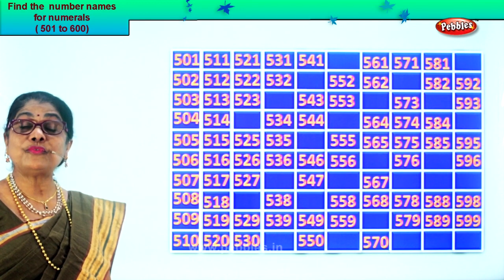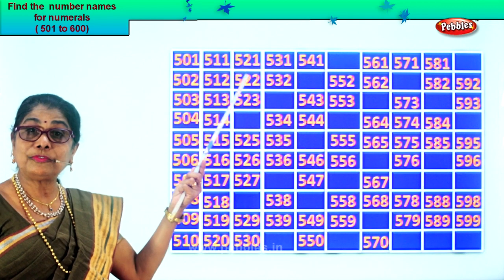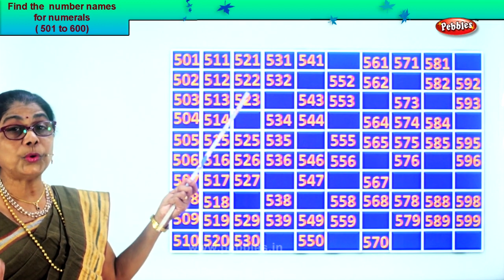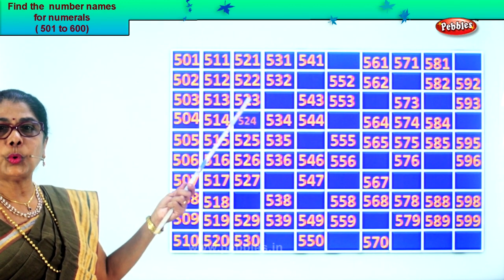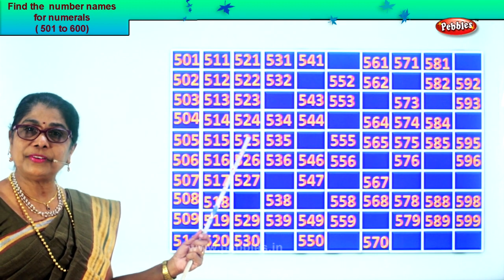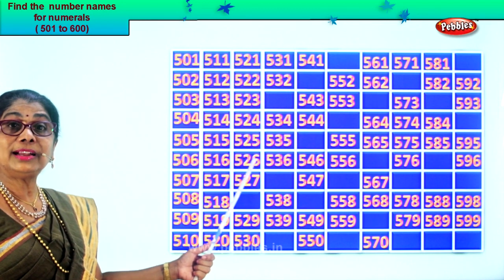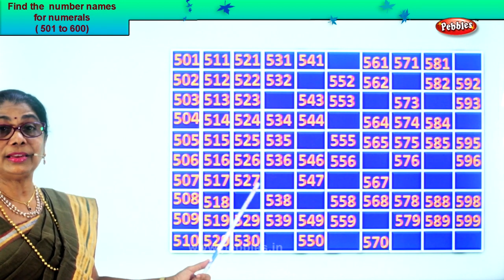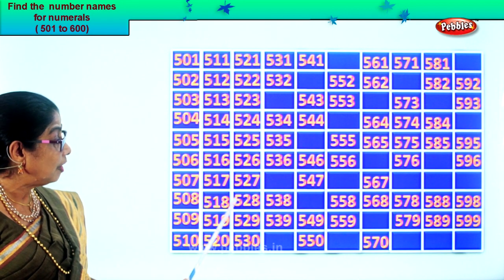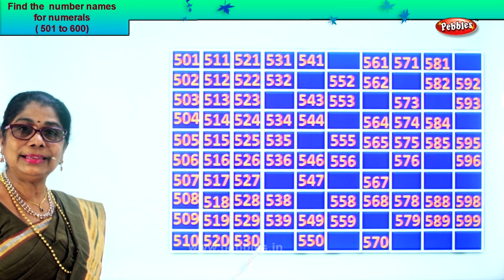Five hundred and twenty. After twenty comes twenty-one, so five hundred and twenty-one. Five hundred and twenty-two. Five hundred and twenty-three. After twenty-three comes twenty-four — five hundred and twenty-four. Five hundred and twenty-five. Five hundred and twenty-six. Five hundred and twenty-seven. After twenty-seven comes twenty-eight — five hundred and twenty-eight. Five hundred and twenty-nine. Five hundred and thirty.